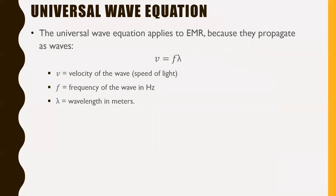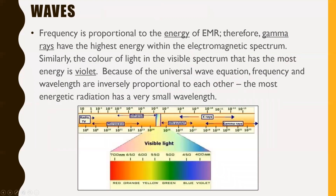The universal wave equation V = Fλ applies to EMR because it propagates as a wave. This is not a new equation — V is velocity (for EMR, that's the speed of light), F is frequency in Hertz, and λ is wavelength in meters. A wave's frequency is proportional to its energy, so gamma rays have the highest energy because they have the highest frequency. In the visible spectrum, violet light has the most energy because it has the lowest wavelength and highest frequency — frequency and wavelength are inversely proportional.